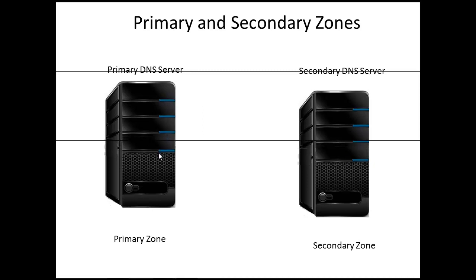Typically, adding a secondary DNS server to a zone involves three steps. On the primary DNS server, what we need to do is add the prospective secondary DNS server to the list of name servers that are authoritative for that zone. We want to take a look at how we will add the prospective secondary DNS server to the list of name servers that are authoritative for the zone.